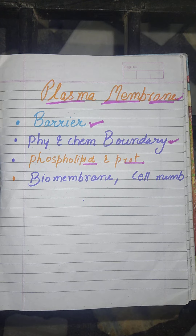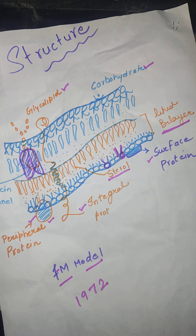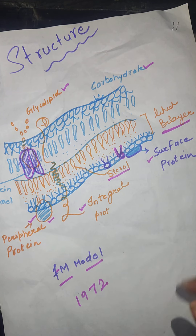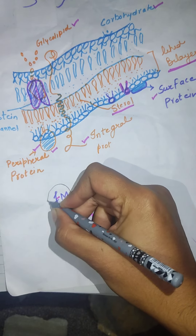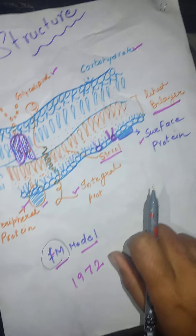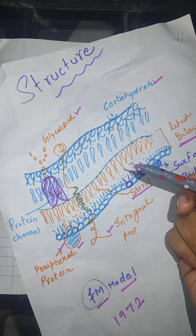If we elaborate it structurally, this is the structure of plasma membrane which was given by Singer and Nicolson in 1972 as a part of their fluid mosaic model. In this model, they elaborated the structure of plasma membrane.